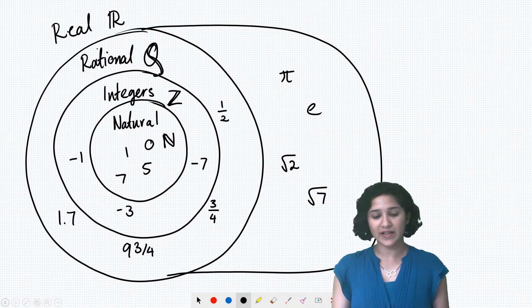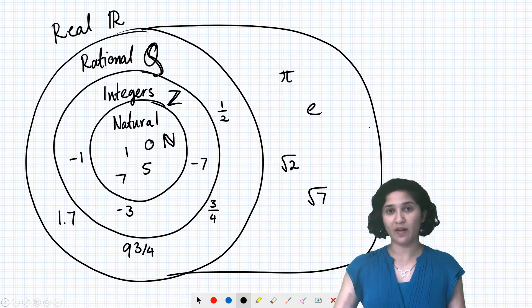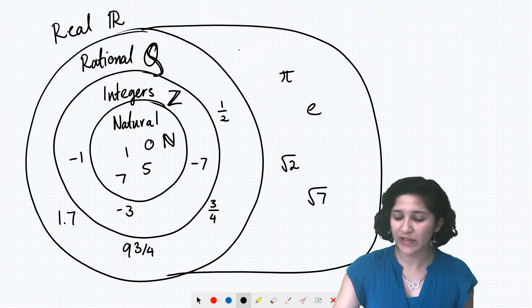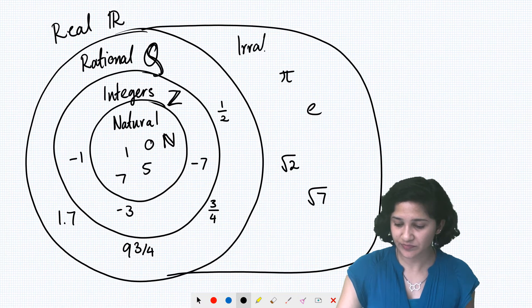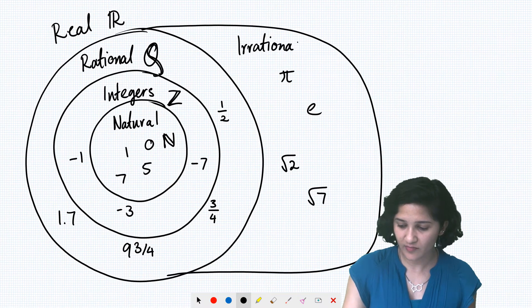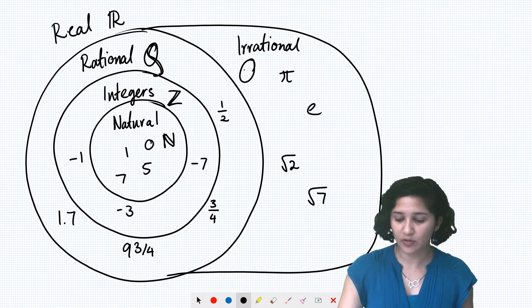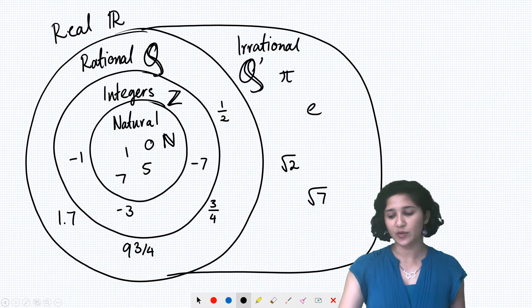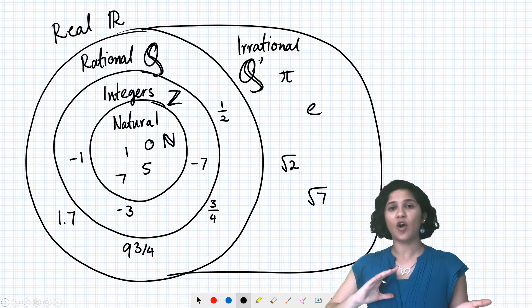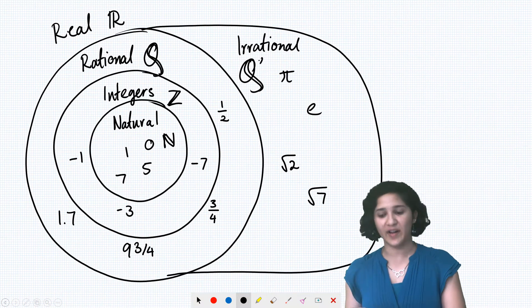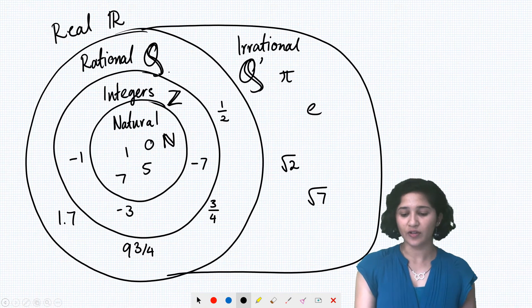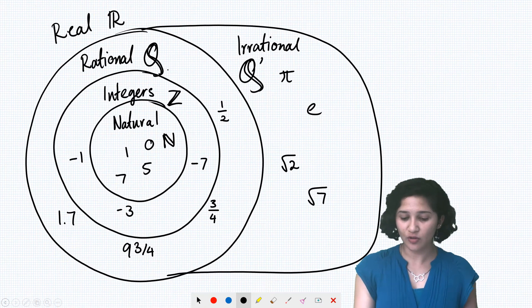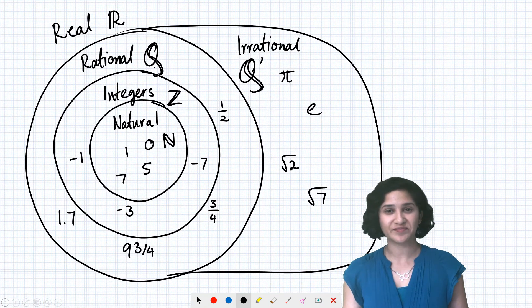And then all these numbers that are real numbers but not rational, they're called the irrational numbers. And so they get the symbol Q dash, because in set notation, whenever we have a dash, that means that's the complement or all the other numbers from the set. So if you're not Q, then you're Q dash.